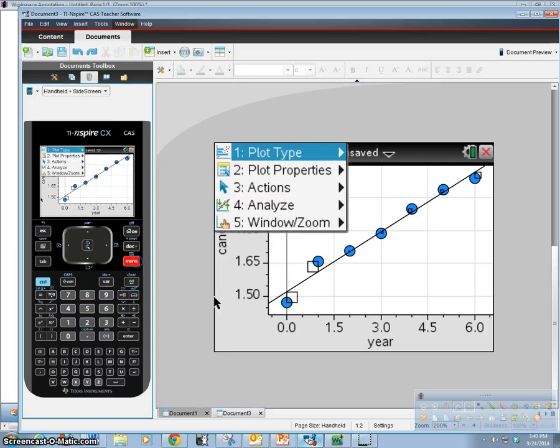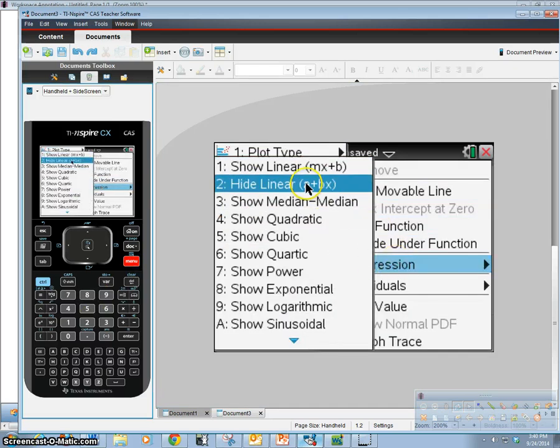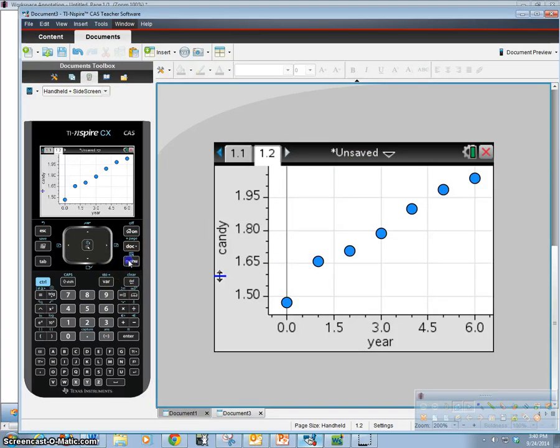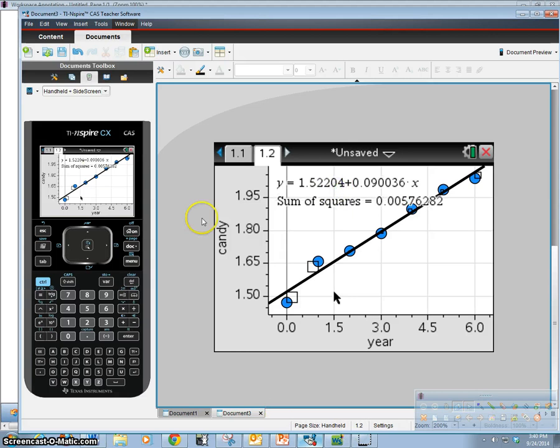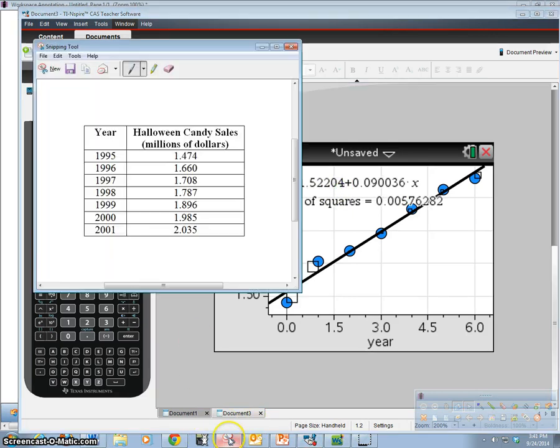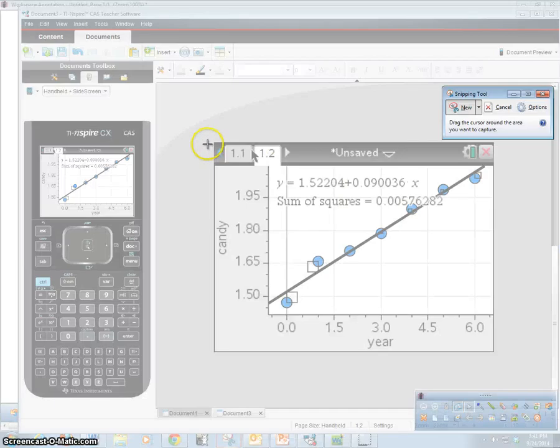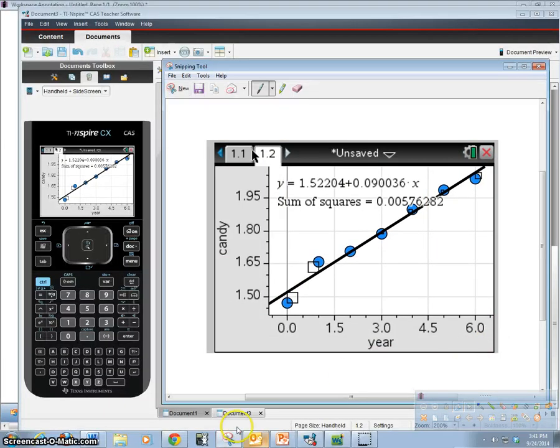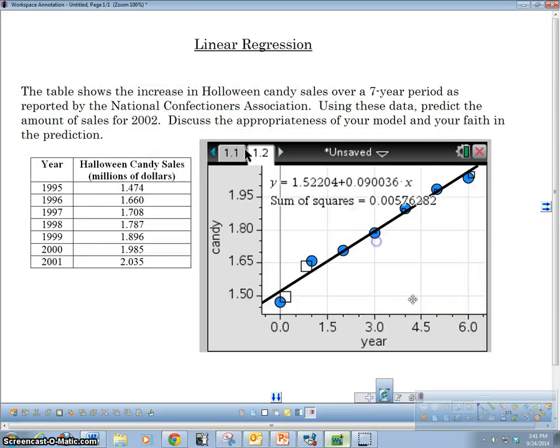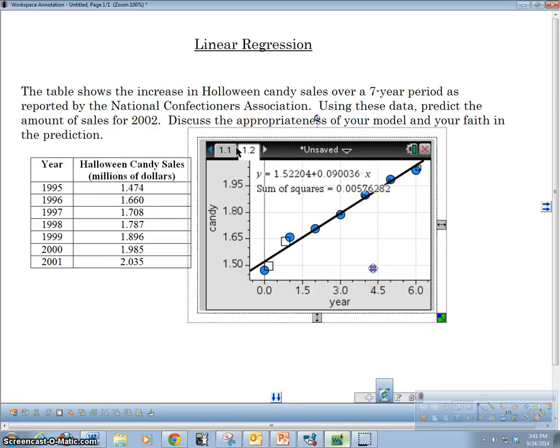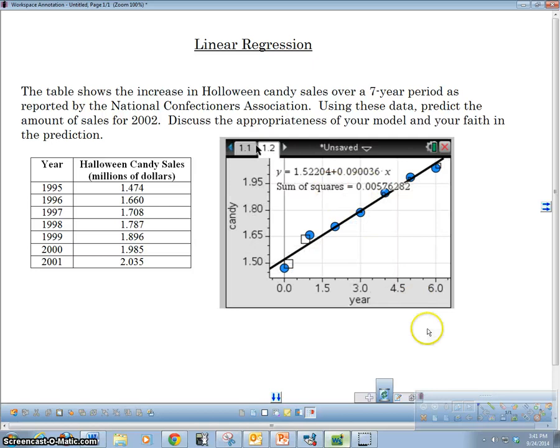So here's my least squares regression line. Let's go ahead and show that again. Okay. So here's my least squares regression line. And let's go ahead and copy this, let's go ahead and copy this picture here to my sheet so that I can make some notes on it.